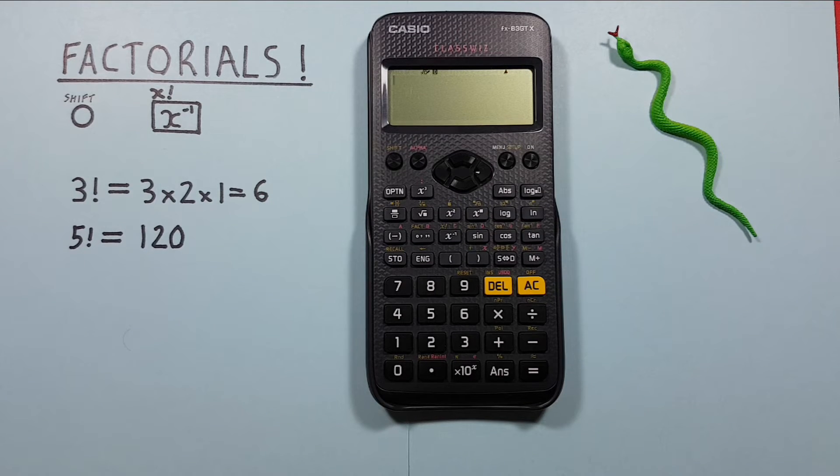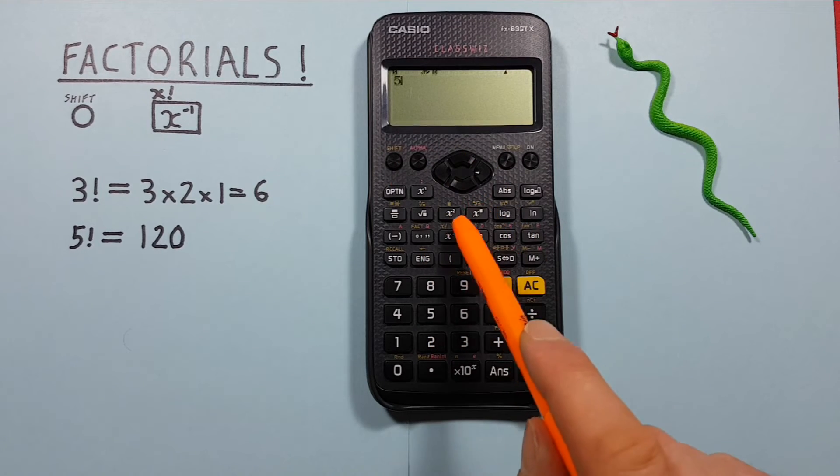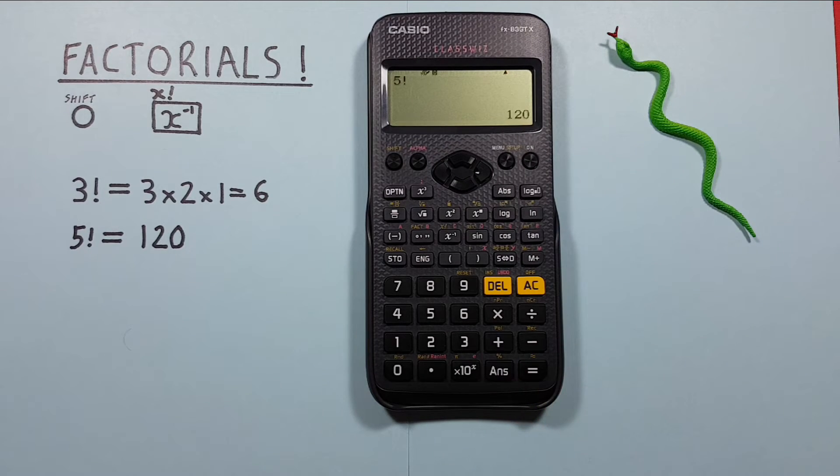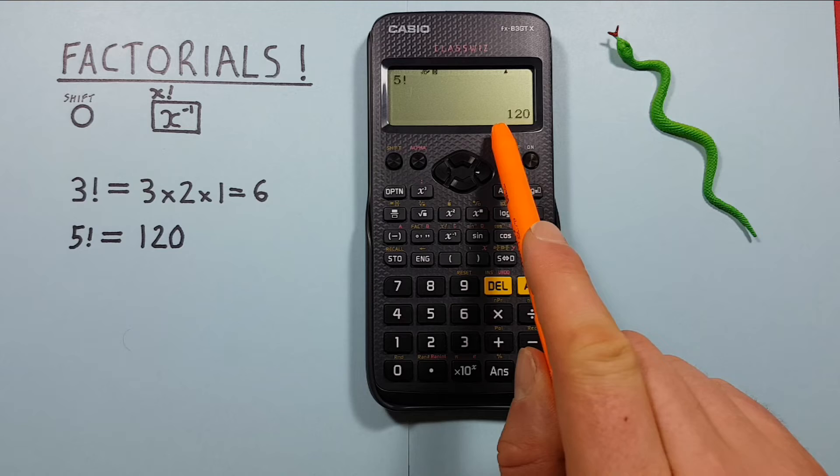Another example if we want to solve 5 factorial we press 5 factorial and press equals and we see we get a result of 120.